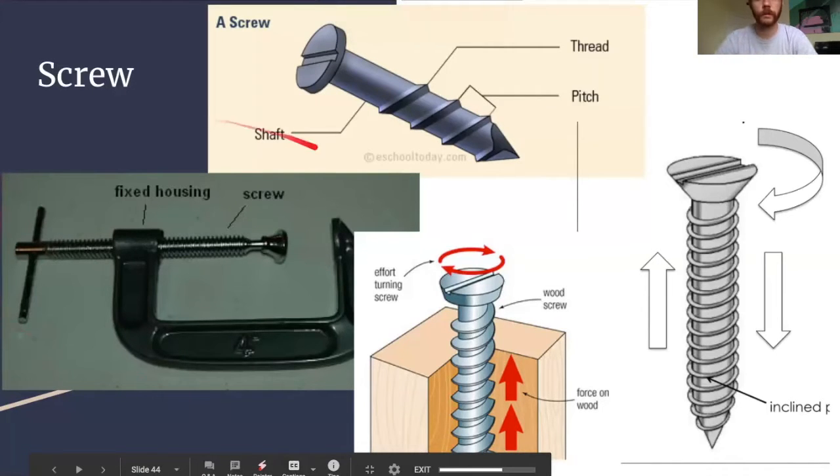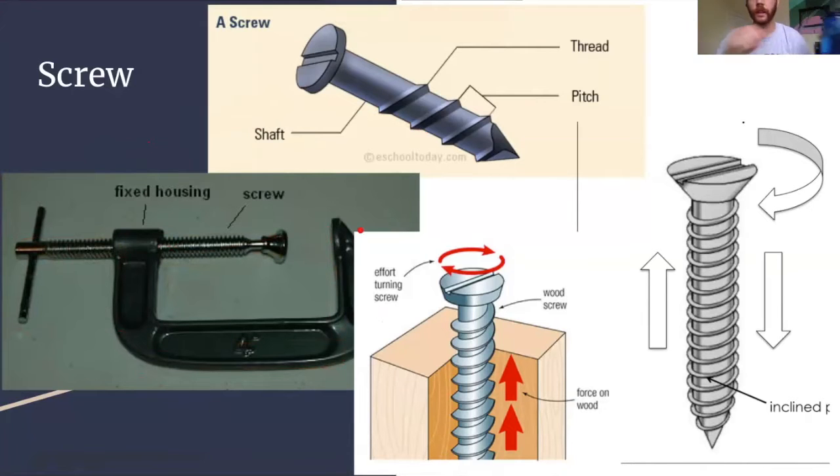These are all examples of a screw. The easiest one to think about is an actual metal screw that you use to join two pieces of wood together. Otherwise, screws can be found in other types of tools like this C-clamp here or on everyday household items like the top of a bottle or jar has a screw on it.